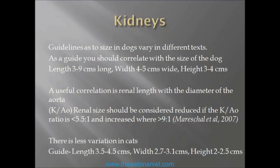With cats there's a little bit less variation, and the average kidney length in a cat is somewhere between 3.5 to 4.5 centimeters.